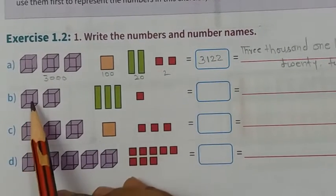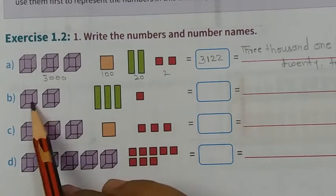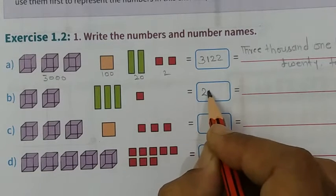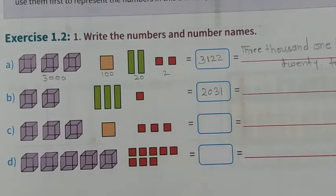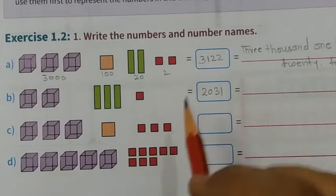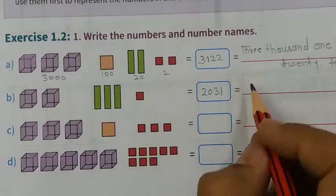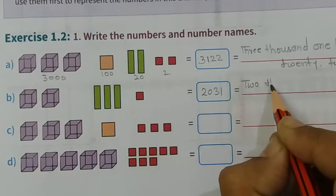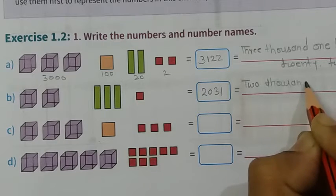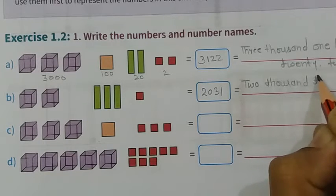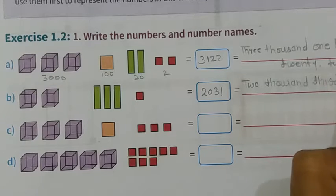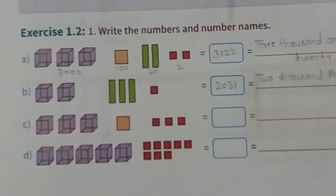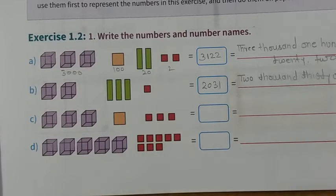Now second part. 2000. What is this? 30, so 2030 and 1 equals 2031. Now there is no hundred portion. How do you do this? 2031, simply you can write here 2031.